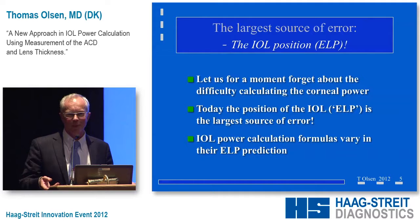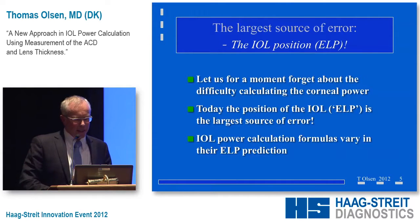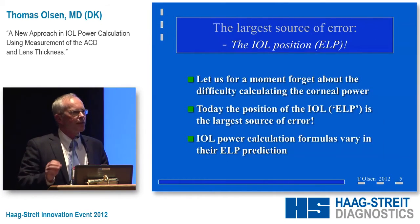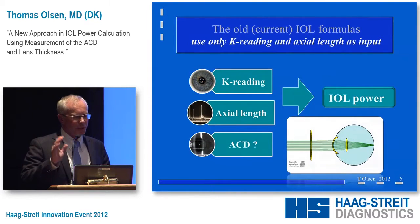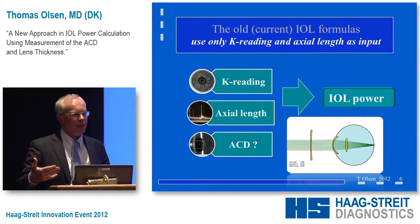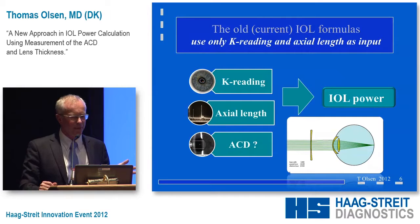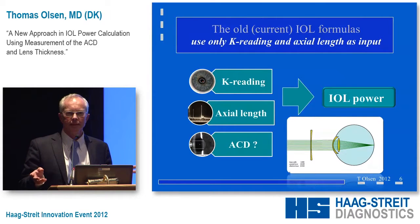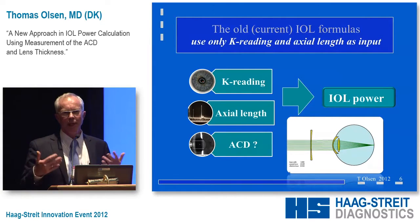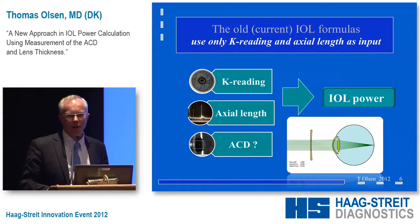I'm going to tell you how we can actually predict that. The formulas vary precisely in this regard — how they actually do the ELP estimation from the two readings they use for input: the K reading and the axial length. From these two readings, they come up with some estimate on the ELP or the ACD post-op.